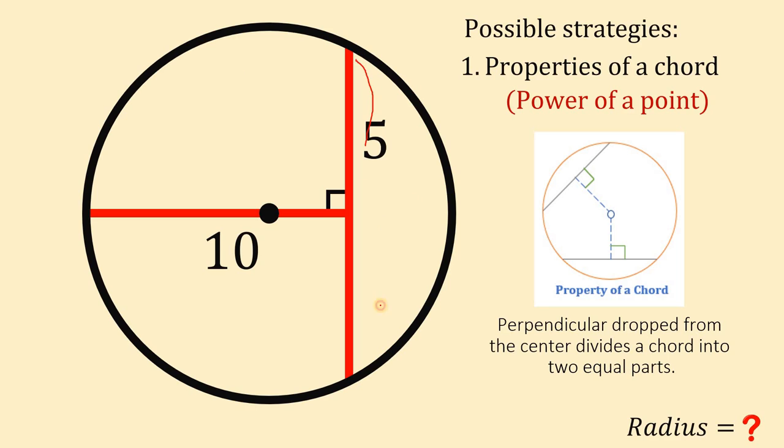Now we have here a chord. We drop a perpendicular line from the center. Therefore, this chord divides into 2 equal parts. We know the half is 5, therefore the other half is also 5.